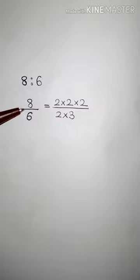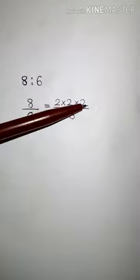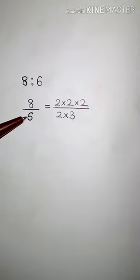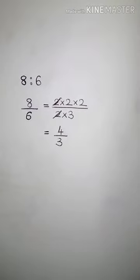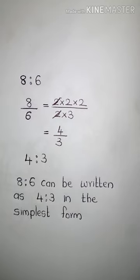To simplify 8/6, first prime factorize both numbers. 8 = 2 × 2 × 2, and 6 = 2 × 3. Cancel the common terms — you get the simplest fraction as 4/3. So 4/3 written as a ratio is 4 is to 3.